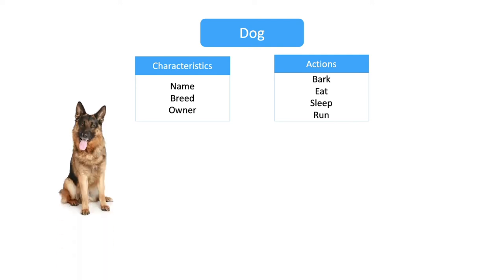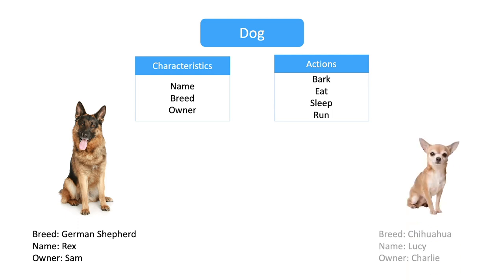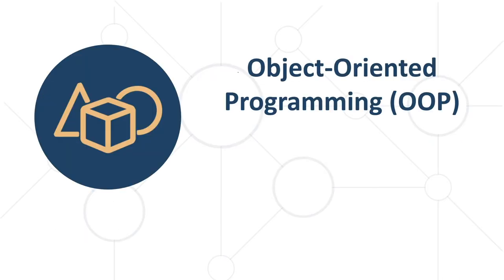One instance of this class may be, for example, a German Shepherd which is called Rex, and its owner is called Sam. It's able to do all the actions we've defined in the class. Another instance may be a chihuahua called Lucy and its owner is, let's say, called Charlie. Again, it will be able to bark, eat, sleep, and run because we've defined this behavior in the class.